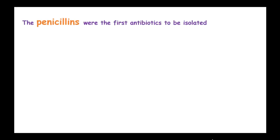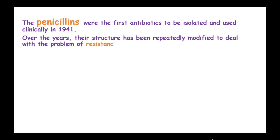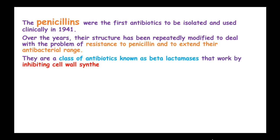The penicillins were the first antibiotics to be isolated and used clinically in 1941. Over the years, their structures have been repeatedly modified to deal with the problem of resistance to penicillin and also to extend their antibacterial range. They are a class of antibiotics known as beta-lactams which work by inhibiting cell wall synthesis.